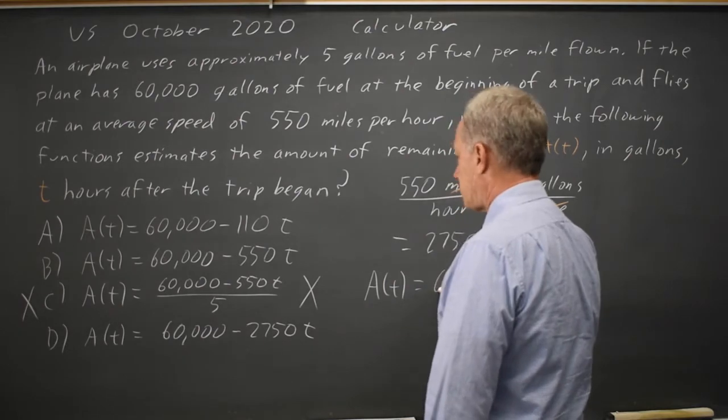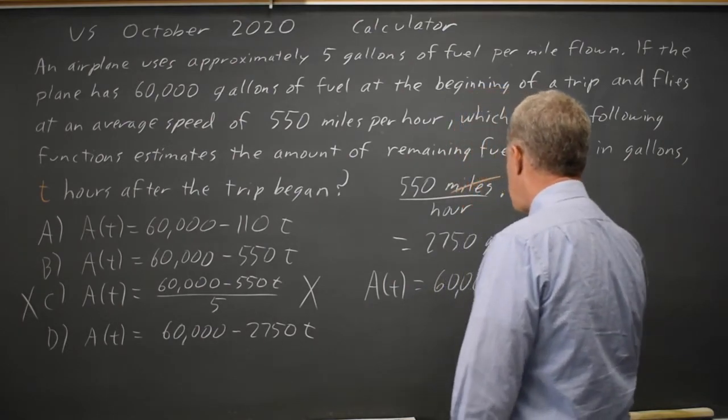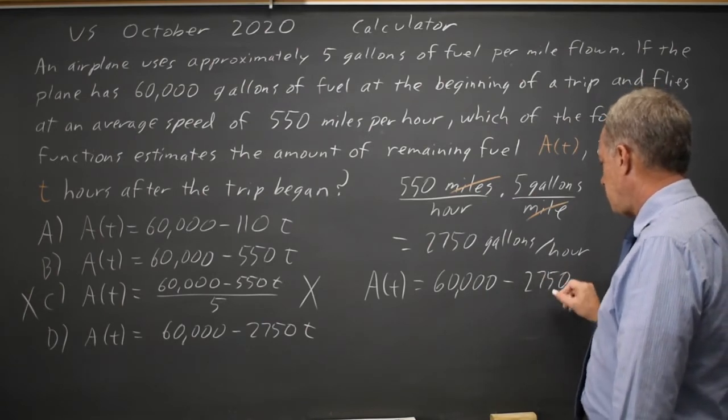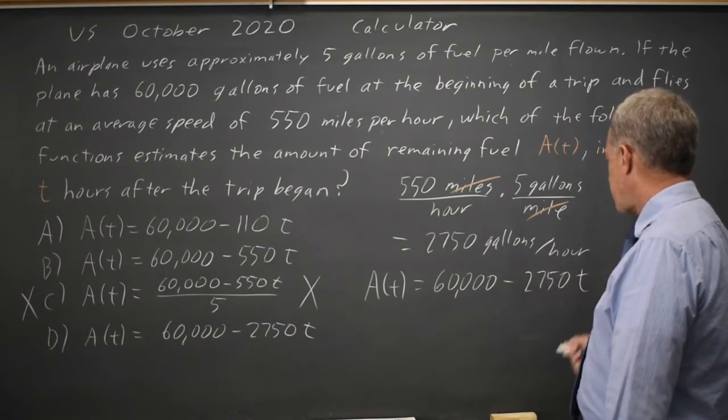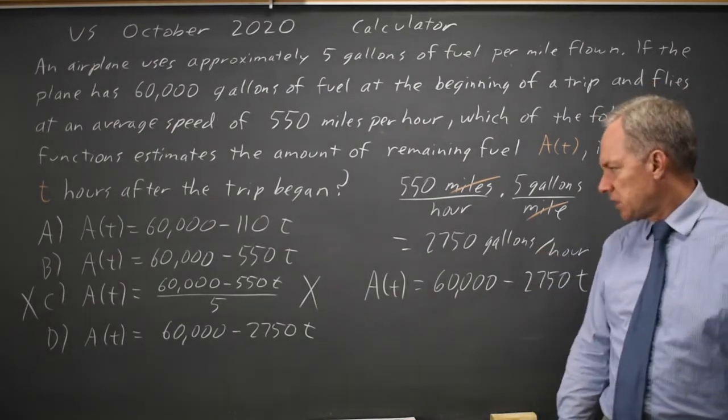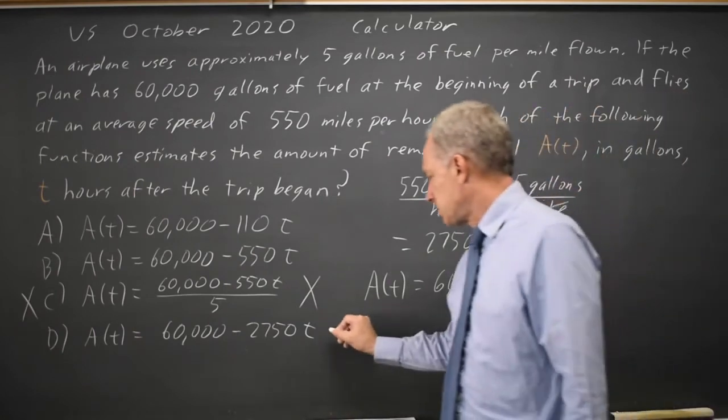is the amount you started with, minus fuel used per hour in gallons per hour times the number of hours. And gallons per hour times hours will give you gallons used. And this matches choice D.